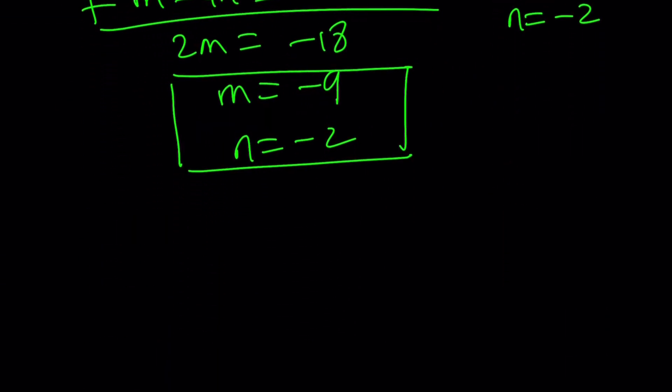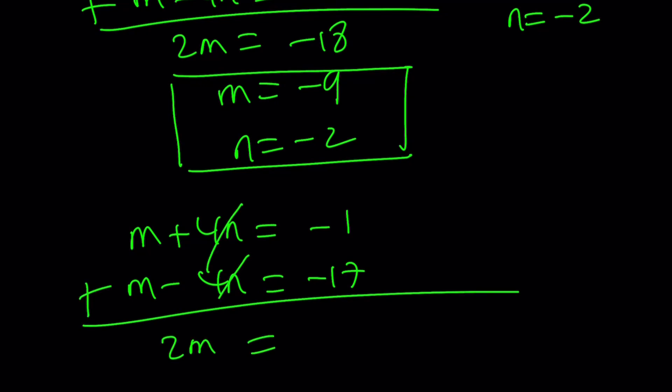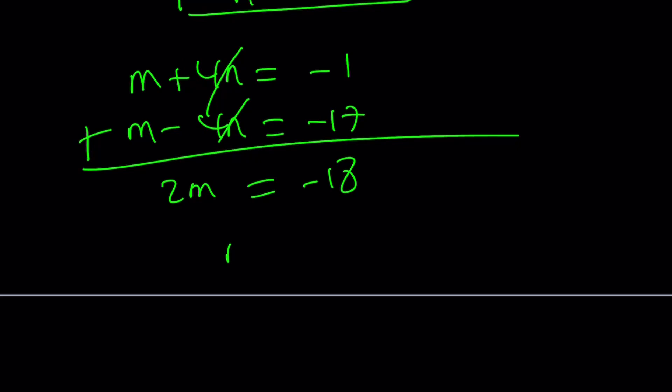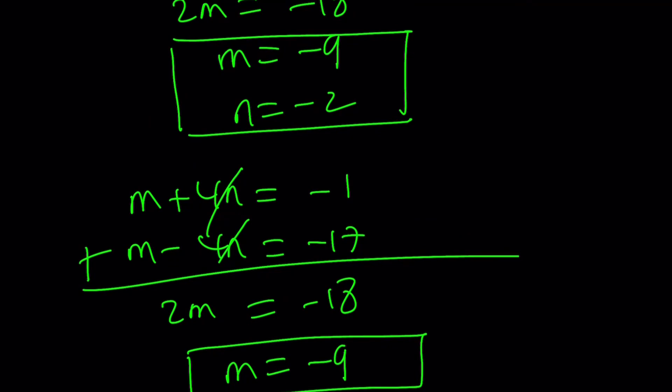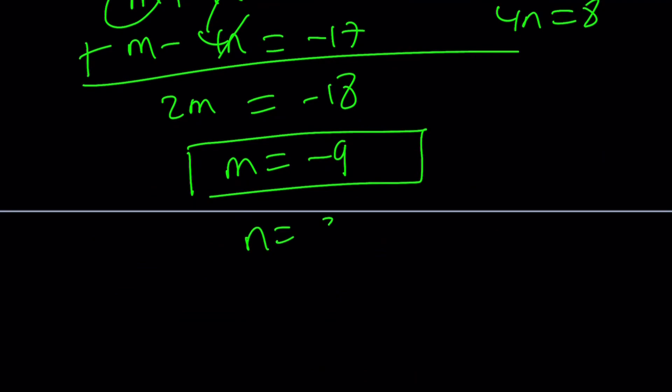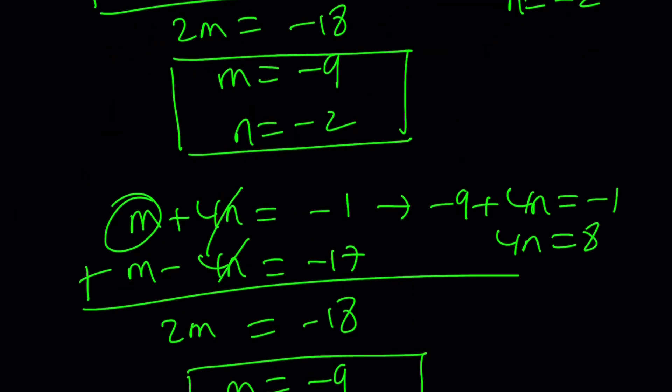So the fourth solution shouldn't be hard to guess. We're going to get m plus 4n is negative 1, and m minus 4n is negative 17. By adding these again, we get 2m equals negative 18, which implies m equals negative 9. So m equals negative 9. What about the n value? Again, plug it in. You're going to get negative 9 plus 4n equals negative 1. And this time, by adding 9 to both sides, you're going to get 4n equals positive 8, and n equals 2.